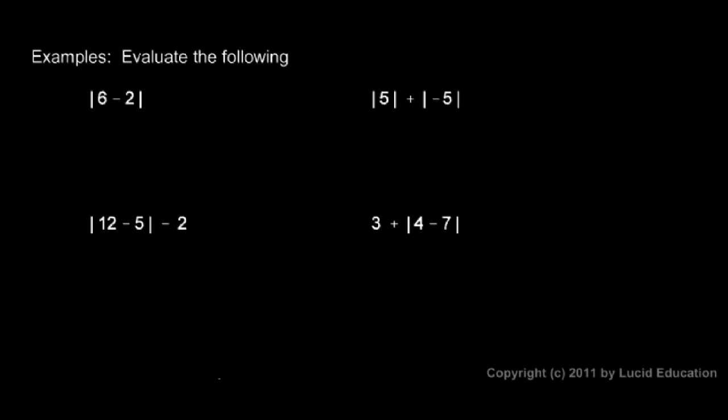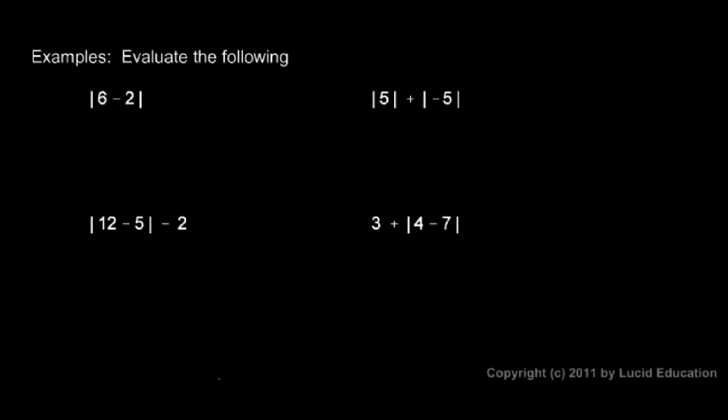The thing to note here is that the absolute value symbols act as grouping symbols. They behave in a manner not just like the absolute value signs, but also like parentheses. In other words, whatever is inside an absolute value symbol, we have to do first. So down here in this example, we need to compute 12 minus 5 and take the absolute value there before we do this subtraction. This is as if we had parentheses here in addition to the absolute value sign. The absolute value sign acts as a grouping symbol.